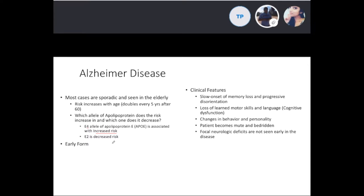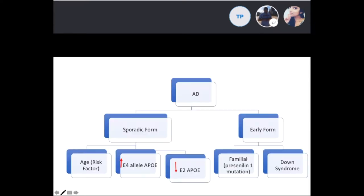There are two types of early-onset Alzheimer's: familial cases and Down syndrome. The familial case is associated with mutations in the presenilin-1 and presenilin-2 genes. Down syndrome commonly presents with Alzheimer's by age 40 because the amyloid precursor protein gene is on chromosome 21, and Down syndrome patients have an extra copy of that chromosome.